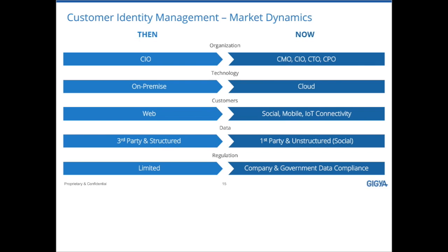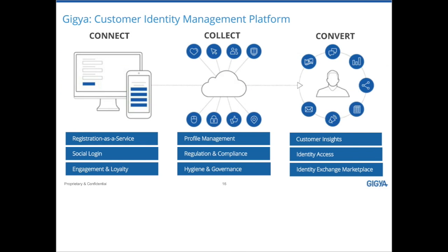We've created a platform that allows you to address these needs — the customer identity platform. We break it into three main components: connect, collect, and convert. The connect piece is where you make that direct connection with the customer. Collection is where you take the customer identity data and store and manage it. The convert portion is where you actually leverage that data to drive business outcomes, ultimately making a return on investment from the data you're collecting.